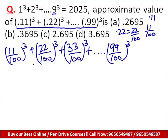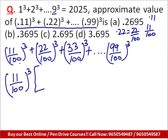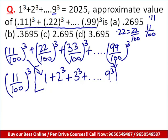Looking at these 9 terms, I can take out (11/100) cubed as the common factor, because 22, 33, 44 … up to 99 are all multiples of 11. After factoring out (11/100) cubed, what remains inside the bracket from each term? From the first term: 1. From (22/100) cubed: 2 cubed. From the third: 3 cubed. This continues until the last term gives 9 cubed. So inside the bracket we have 1 cubed + 2 cubed + … + 9 cubed.